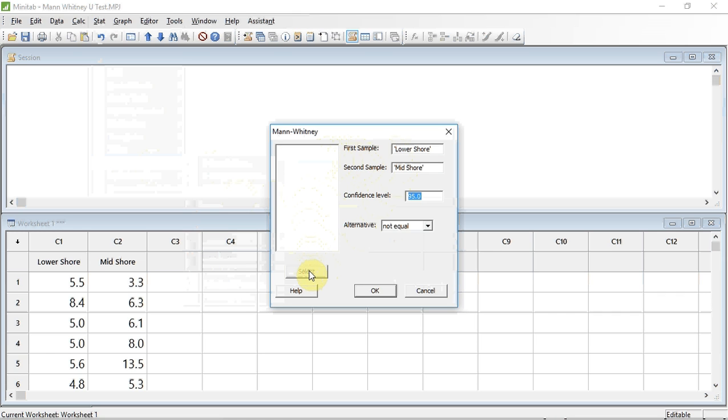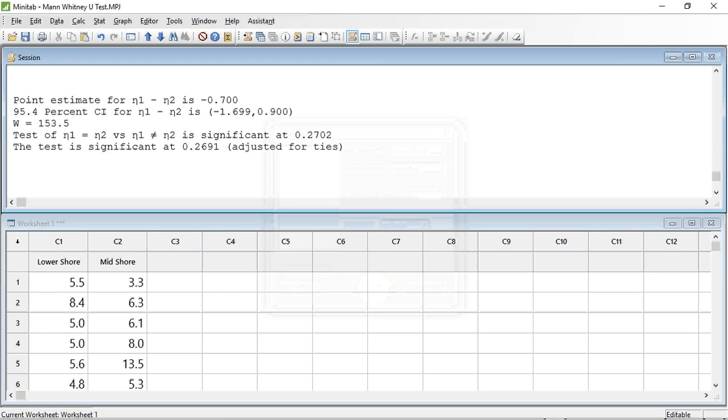Ensure the confidence level is set at 95, and the alternative is not equal. I can then press OK. And here are the results.